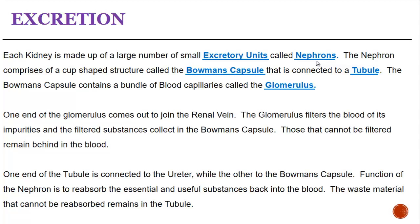One end of the glomerulus comes out to join the renal vein. The glomerulus filters the blood of its impurities and the filtered substances collect in the Bowman's capsule. Those that cannot be filtered remain behind in the blood. One end of the tubule is connected to the ureter while the other is connected to the Bowman's capsule.